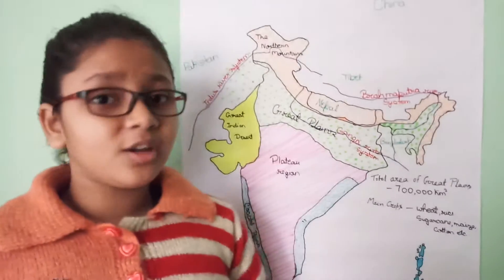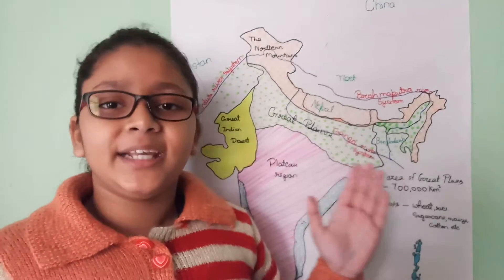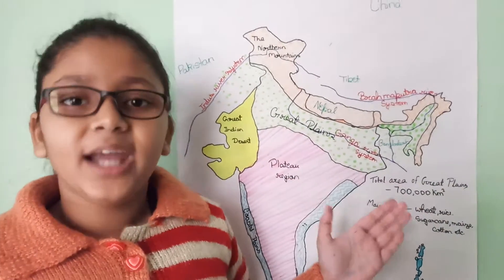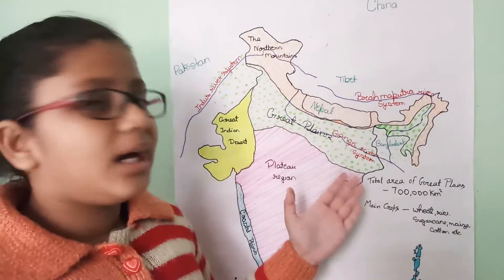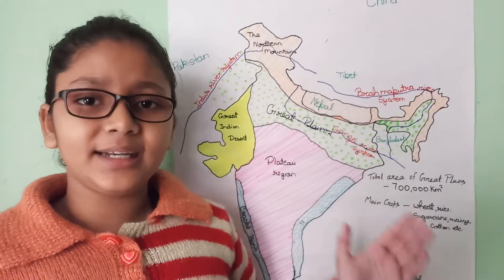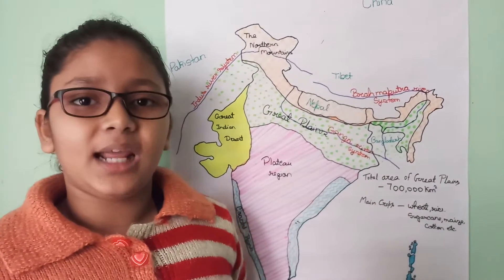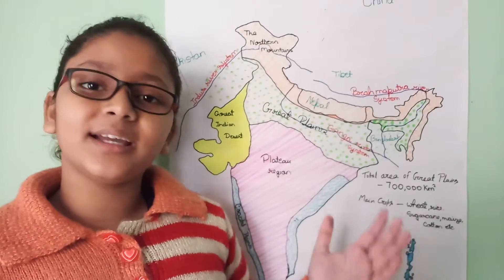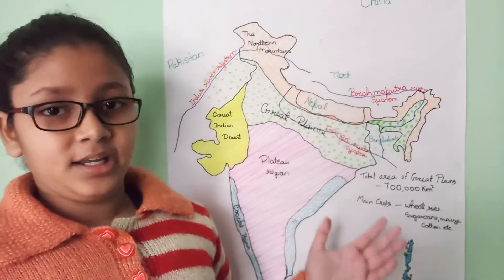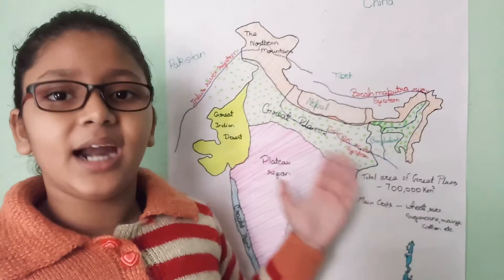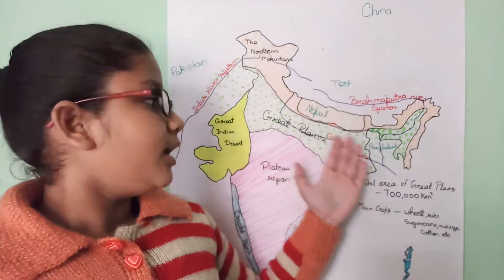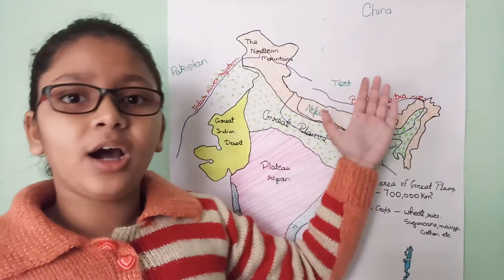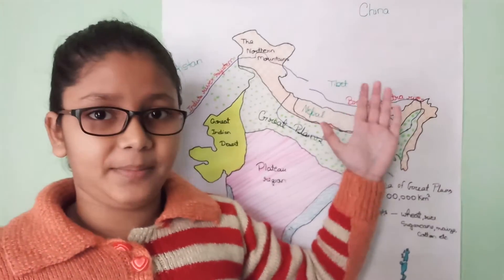The Indo-Gangetic Plains are classified into four parts: the Bhabar belt, the Terai belt, the Bhangar belt, and the Khadar belt. To understand these four classified parts, we will draw an image here.